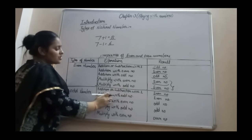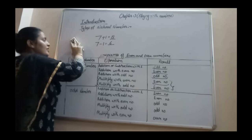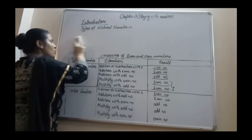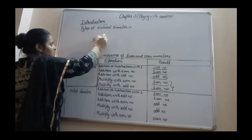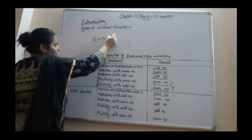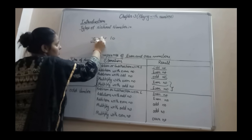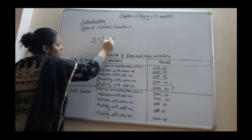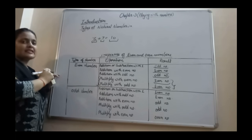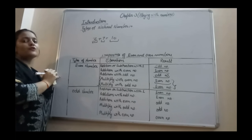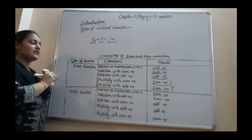Next property: odd number plus odd number. When you add an odd number to another odd number, your result is an even number. For example, 3 is odd and 7 is odd. Their sum is 10, which is an even number. So the sum of two odd numbers is always an even number.